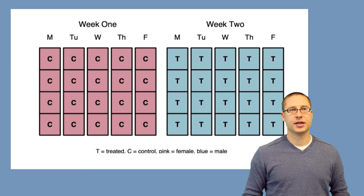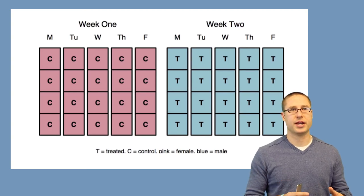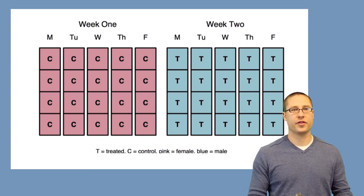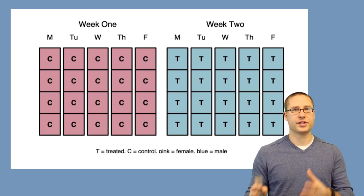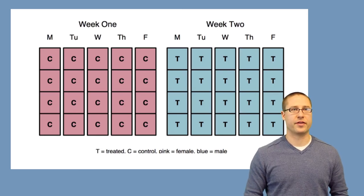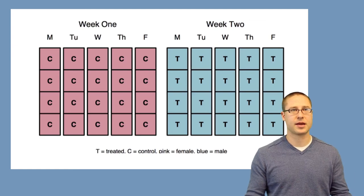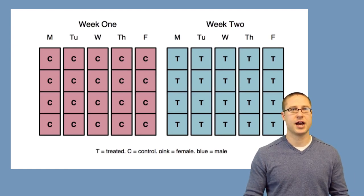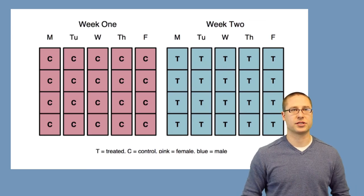A bad design would be to run all the controls as only females in the first week, and all the treated as only males in the second week. Here you have all sorts of confounding — you don't know whether the treatment and control are related to the day that the samples are collected, and they're also related to the sex of the mice. This makes it very difficult to separate out the different sources of signal.